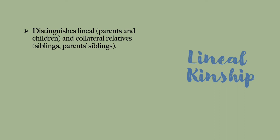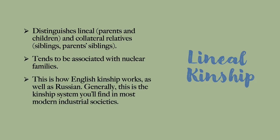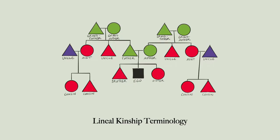Lineal kinship distinguishes lineal relatives from collateral relatives — parents and children from siblings, parents' siblings, parents' parents' siblings, etc. It tends to be associated with nuclear families, because if you look at a lineal kinship chart, the nuclear family is really at the center of it. This is how English kinship works generally, very similar to Russian kinship and the kinship system you'll find in most modern industrial societies. In my hand-drawn kinship chart, you can see lineal relatives in green and collateral relatives in red. If ego had children and I drew them, they would be in green too, and you can see that the nuclear family is really centered here.